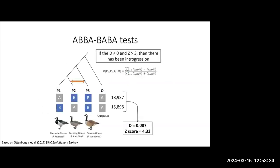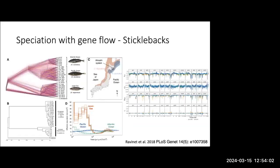When you run these analyses, you estimate the numbers of ABBAs and BABAs. If there's a significant difference, your D-value doesn't equal zero — where we're expecting pretty equal — and you get a Z-score. You can run this in sliding windows to get estimates of introgression, giving you an understanding of gene flow across the landscape.